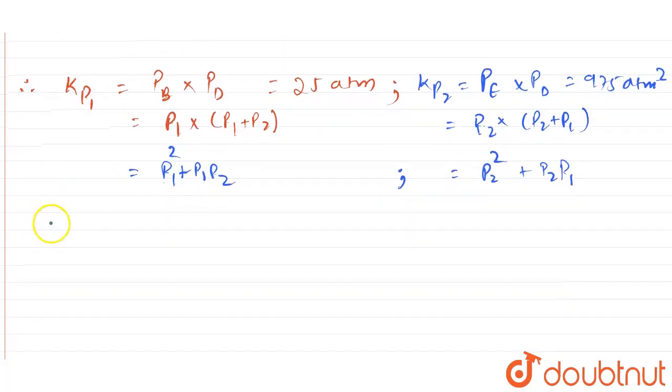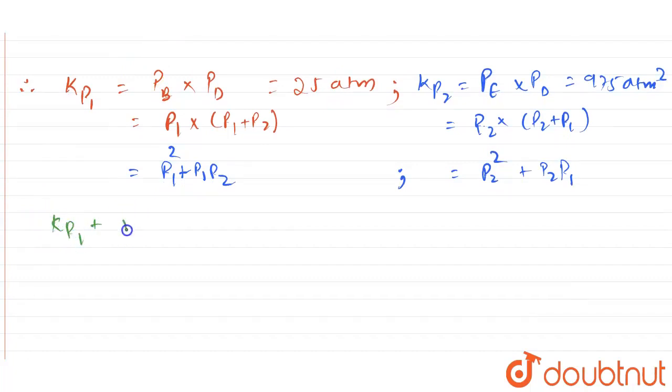Now what we are going to do is add Kp1 plus Kp2. So Kp1 plus Kp2 is going to give us 25 plus 975, which equals 1000 atm square.